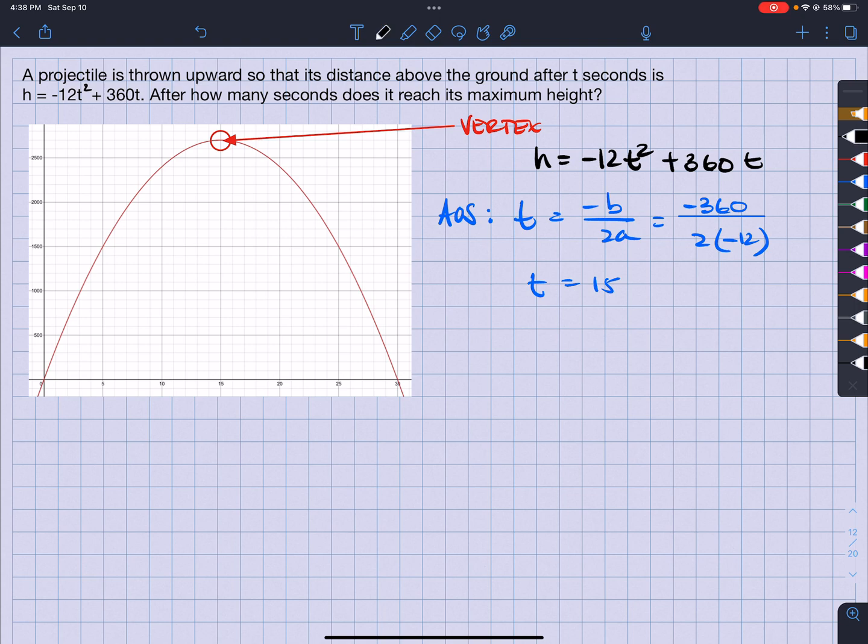But I'm looking for the height. In other words, I'm going to look for the height when t equals 15. That's going to be negative 12 times t squared plus 360 times 15. Let's see what the height is at 15 seconds. Negative 12 times 15 squared plus 360 times 15, so what I get is 2,700.